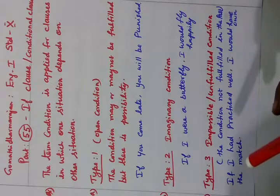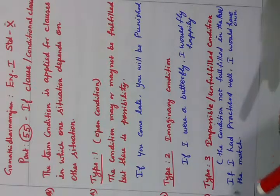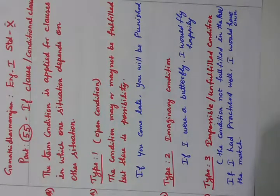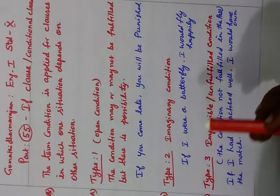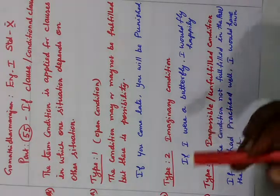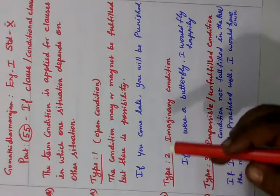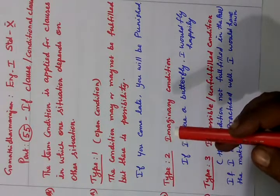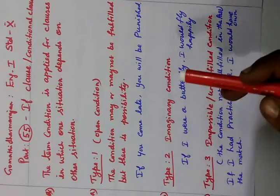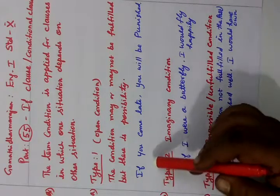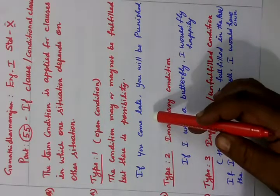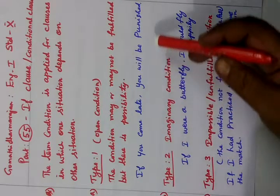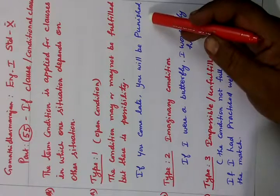Type 1, Type 2, Type 3. We see the first type: Open Condition. Here, the condition may or may not be fulfilled — there is some possibility. For example: if you come late, you will be punished.